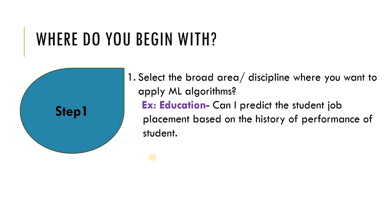Here are a couple of examples. One is education — can I predict whether the student will get placed or not, based on the history of their academic performance? These are older projects, but I just wanted to give you a feel for how a problem statement can emerge from a broader field. Another example is plant disease detection. Though we have enough algorithms and enough research has been carried out, people say there is still enough scope in the field of agriculture. So like this, select some domain.